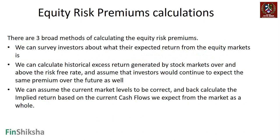There are three broad methods of calculating risk premiums. The first is the survey method. The second is calculating historical excess returns — finding RM or return on the market over many years and subtracting the historical risk-free rate average, then assuming investors will continue to expect the same premium in the future. The third, most dynamic way, assumes the current market level is correct, meaning the market is fairly valued.